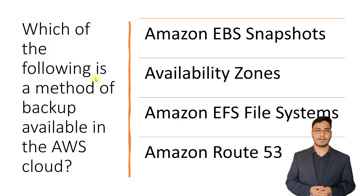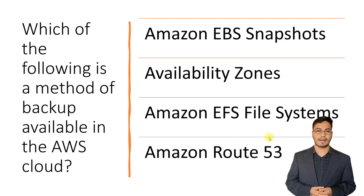In this question they are asking: which of the following is a method of backup available in the AWS cloud? We are looking for a method to keep our backup. The options are: Amazon EBS Snapshots, Availability Zones, Amazon EFS file systems, or Amazon Route 53.